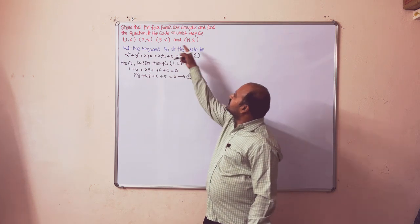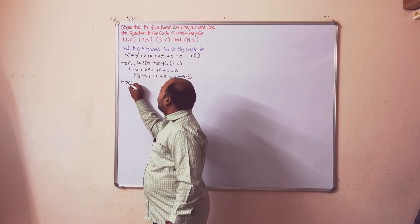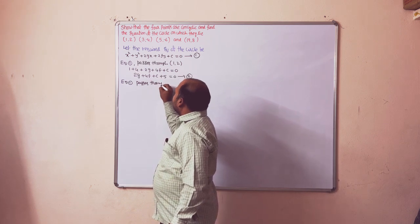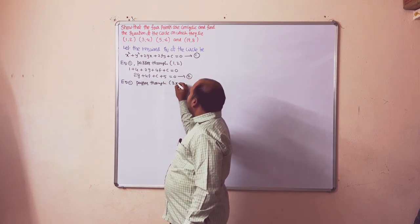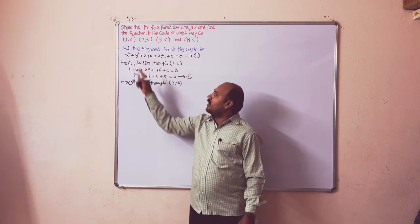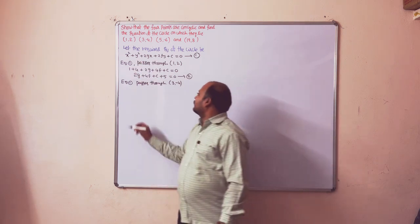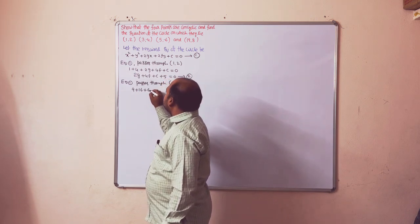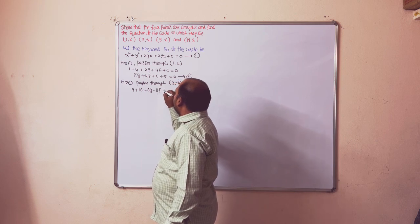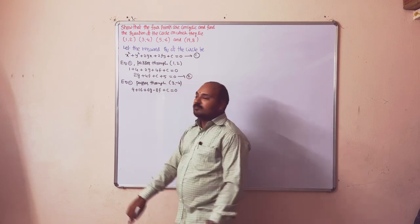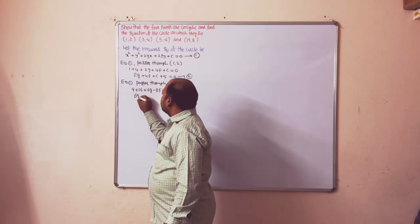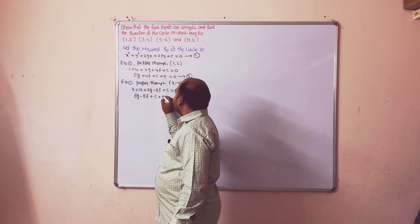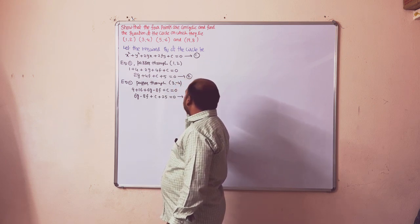Equation 1 passes through the second point (3, -4). Substituting x = 3 and y = -4: 9 + 16 + 6g - 8f + c = 0, which simplifies to 6g - 8f + c + 25 = 0. This is Equation 3.